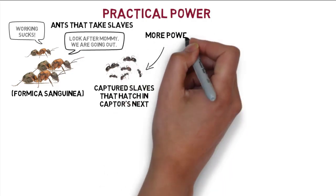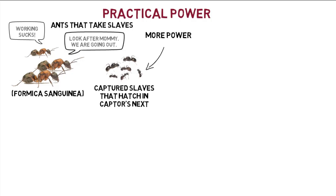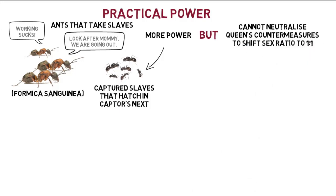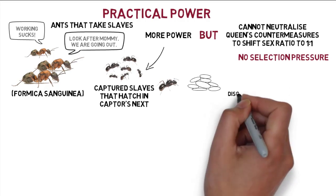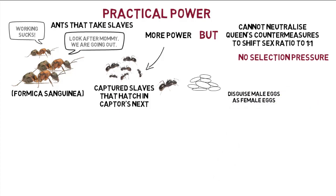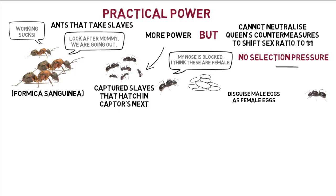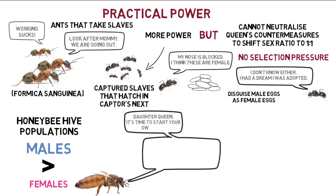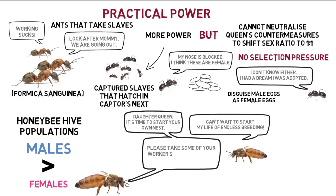The power of the nest is held by slaves programmed to behave as in their own nests and achieve the three-to-one bias, but they are ineffective at neutralizing the countermeasures of the slave-making queen who tries to shift the sex ratio in her preference. In some species, queens attempt to disguise male eggs as female eggs through smell, and natural selection would favor workers that can discern this disguise — but in slaves, this ability is not passed on. Trivers and Hare therefore found the sex ratio in these species approached one-to-one. For honeybees, there seems to be a large surplus of males, because when queens leave to start a new colony, female workers are lost from the parent hive.